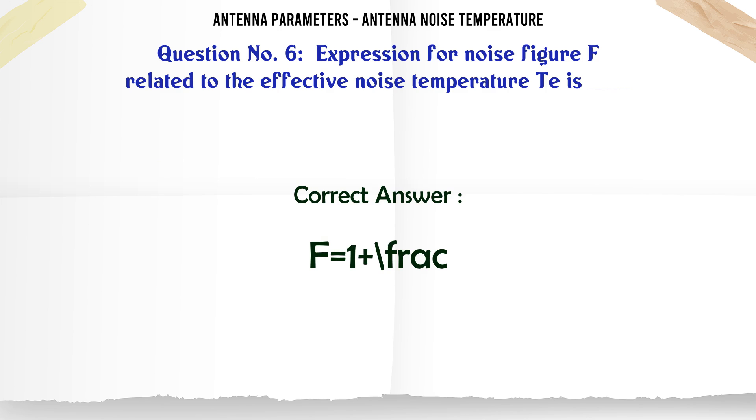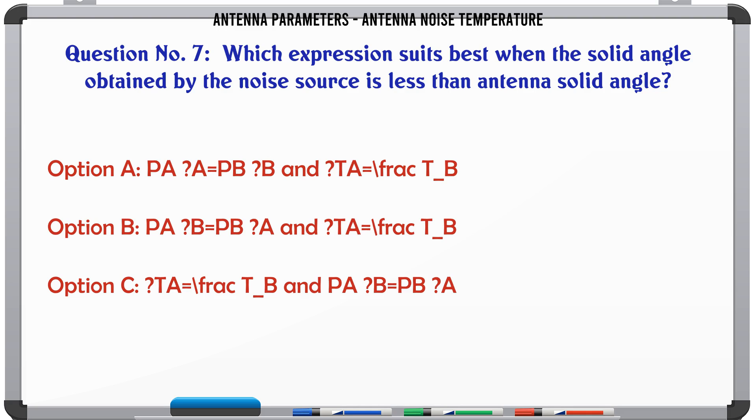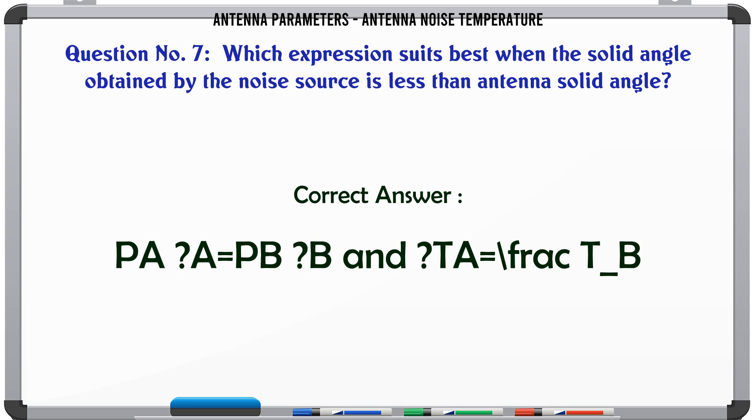Which expression suits best when the solid angle obtained by the noise source is less than antenna solid angle? Option A: Pa equals PB times omega B and tau equals frac omega B over omega A times T_B. Option B: Pa equals omega B times PB times omega A and tau equals frac omega B over omega A times T_B. Option C: tau equals frac omega A over omega B times T_B and Pa equals omega B times PB times omega A. Option D: tau equals frac omega A over omega B times T_B and Pa equals omega A times PB times omega B. The correct answer is Pa equals omega A times PB times omega B and tau equals frac omega B over omega A times T_B.